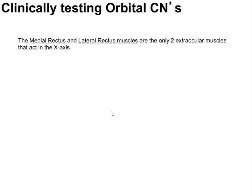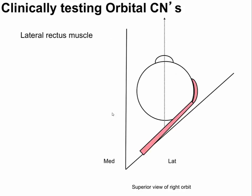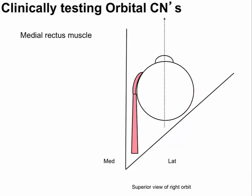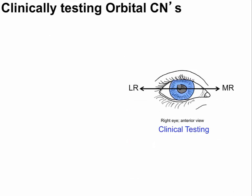The medial rectus and lateral rectus muscles are the only two extraocular muscles that act in the x-axis. The lateral rectus abducts the eye and the medial rectus adducts the eye, so to clinically test them, have the patient look towards their nose or towards the wall. Testing the medial rectus tests cranial nerve 3; testing the lateral rectus tests the abducens nerve, cranial nerve 6.